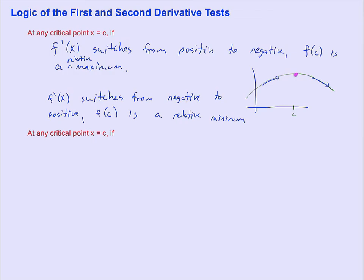The other test is called the second derivative test. One thing I want to point out before we move on: notice how I don't care about the sign of f prime of c itself, because f prime of c is zero so it's neither positive nor negative. We don't care about the sign of f prime at c exactly; we care about the sign of f prime before c or after c.